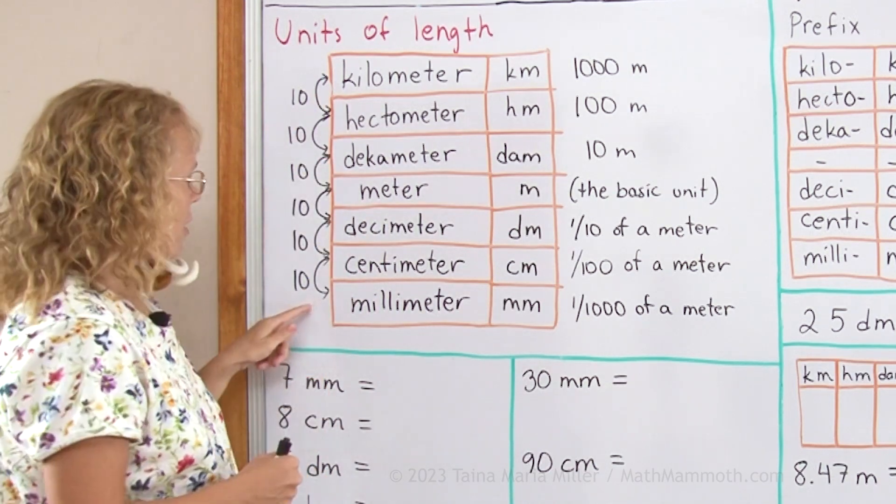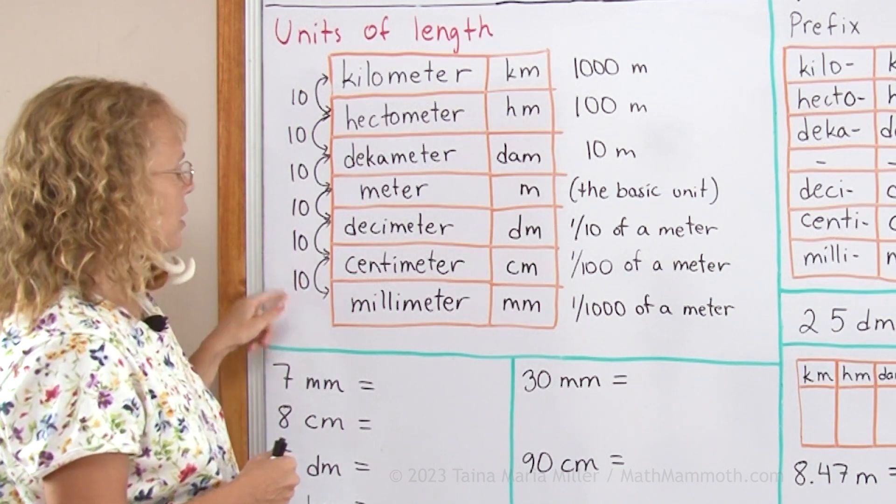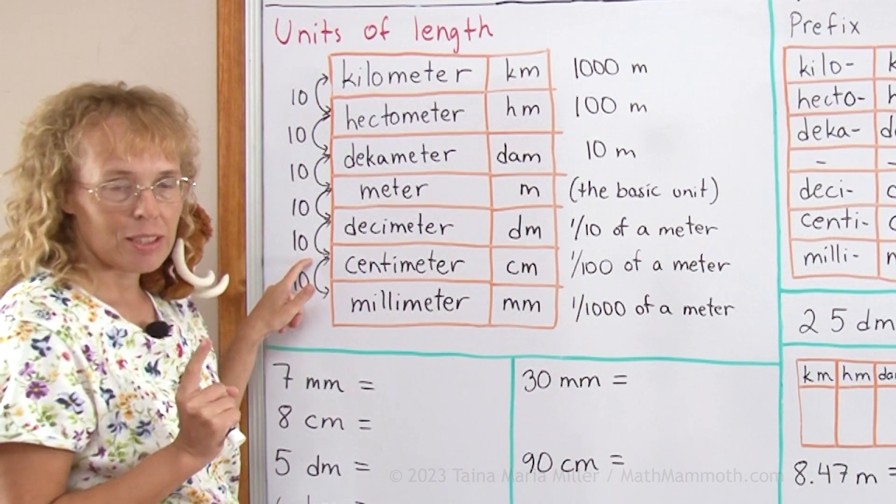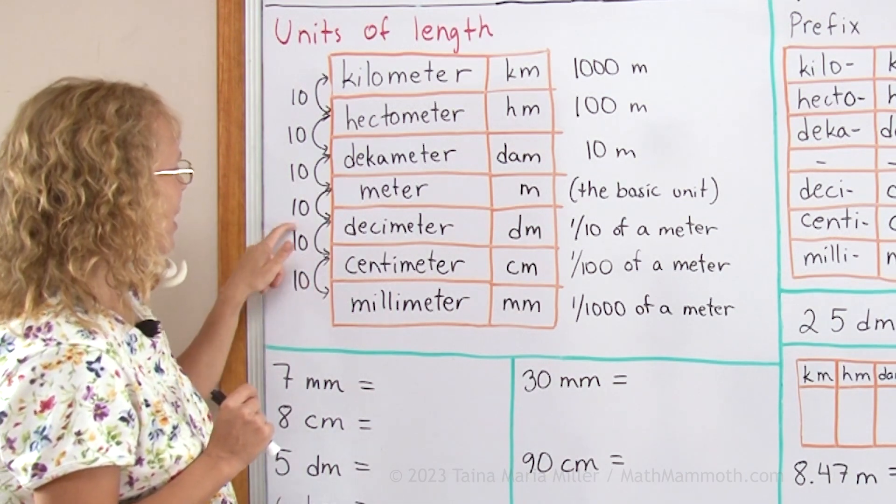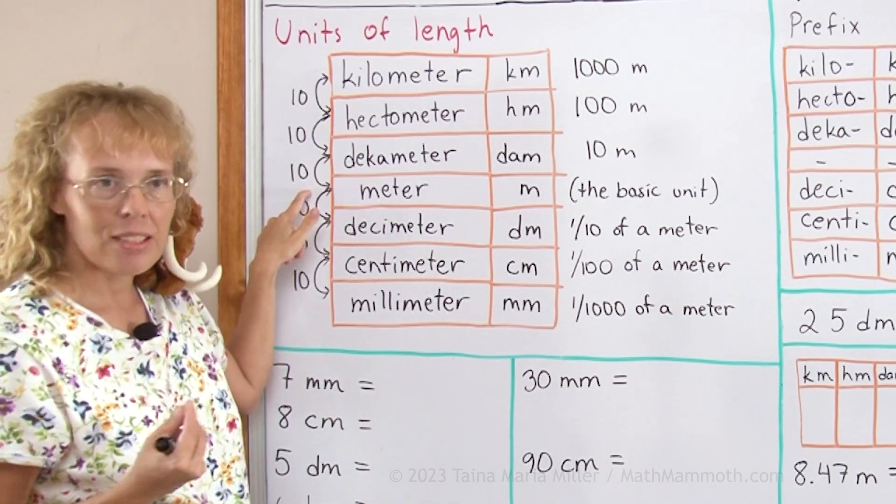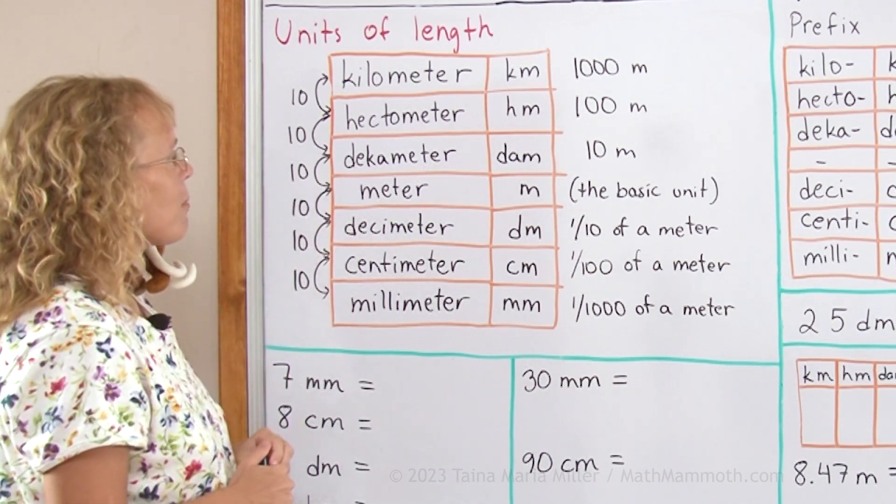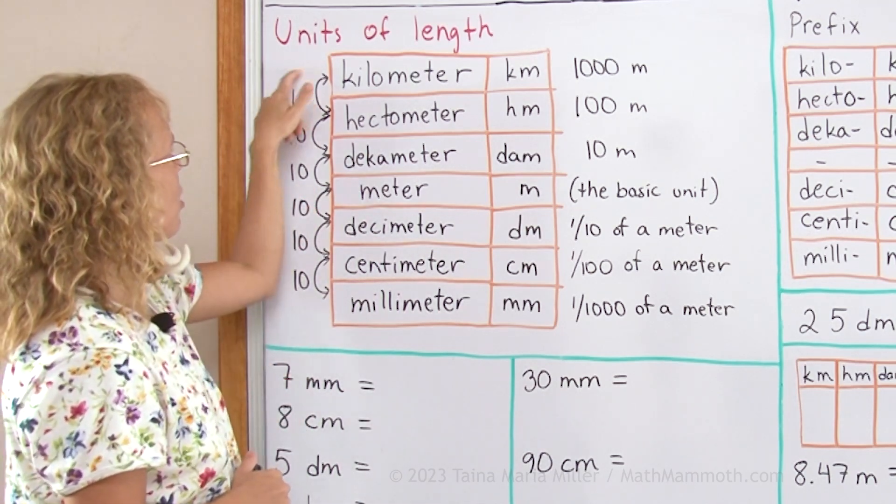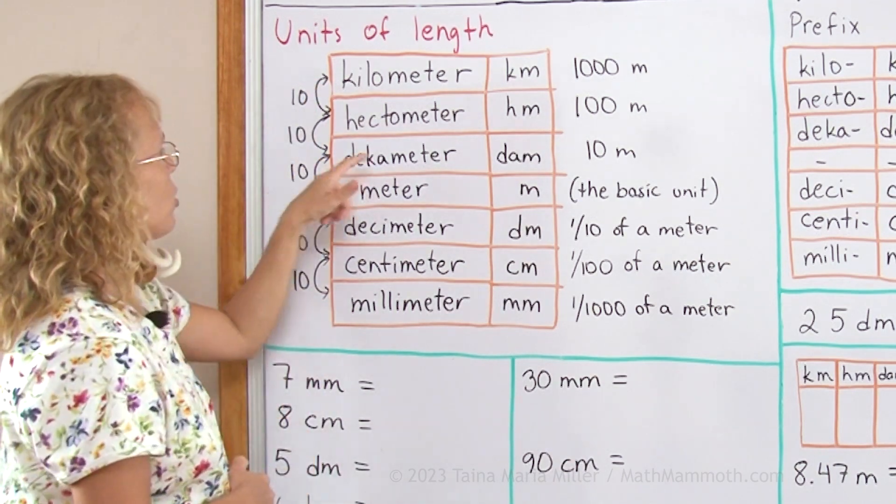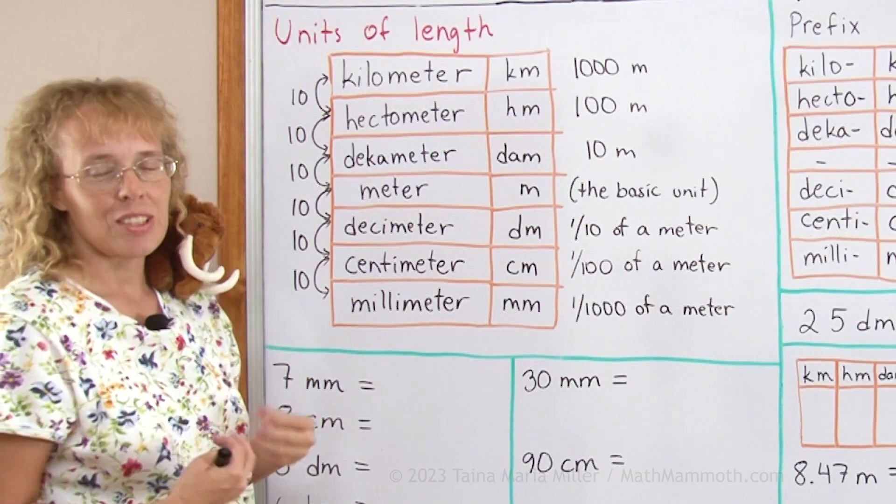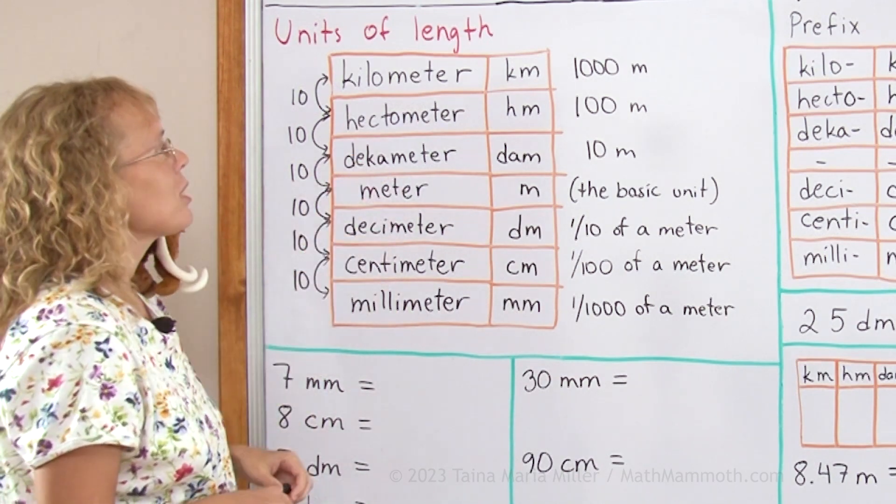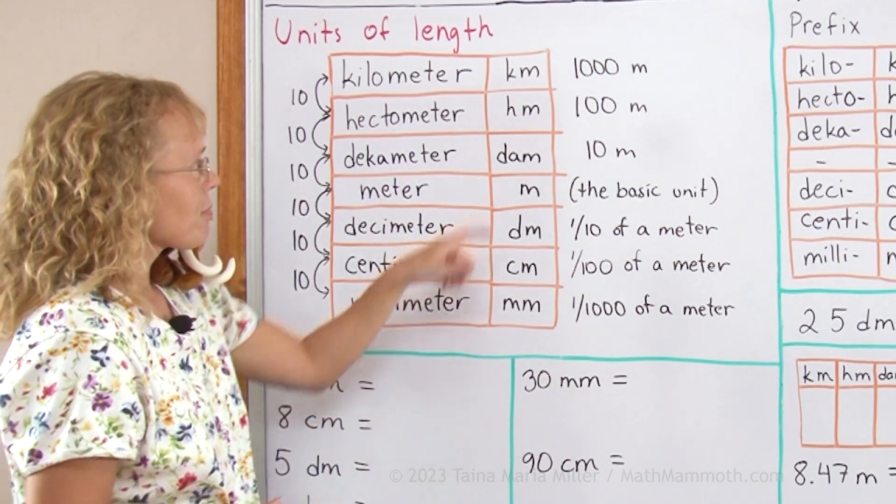Because the factor between each two units is always 10. So 10 millimeters makes 1 centimeter, and 10 centimeters makes a decimeter, and then 10 decimeters makes a meter, and so on. So from meter to kilometer, the factor is 1000 as you know. But there's actually two units that are not used in normal life, but they are there anyway: decimeter and hectometer.